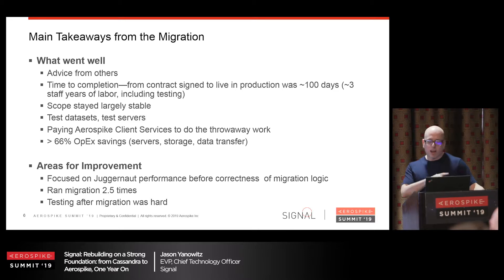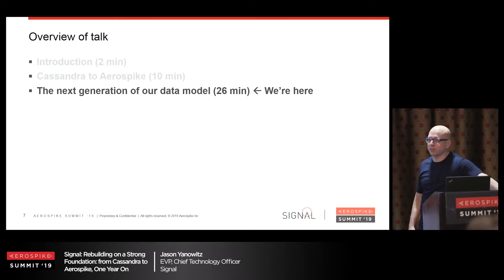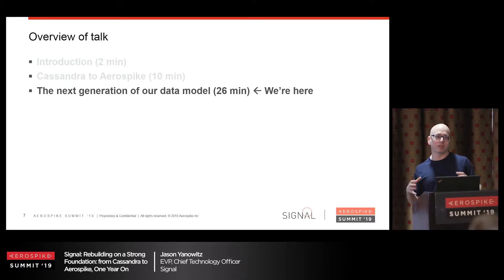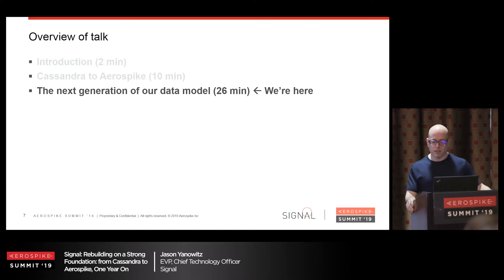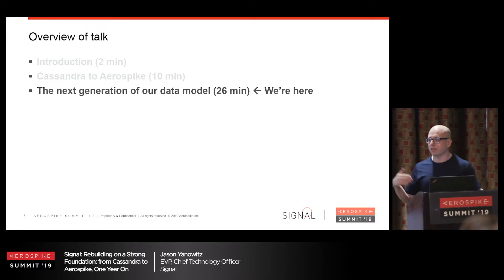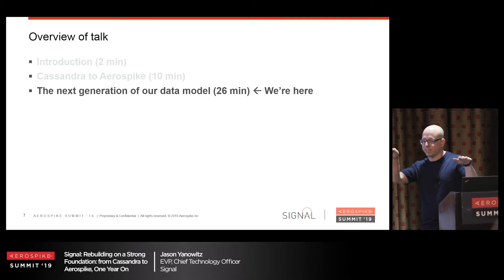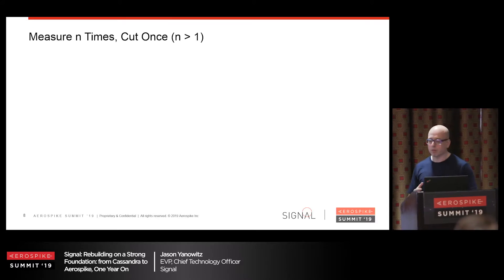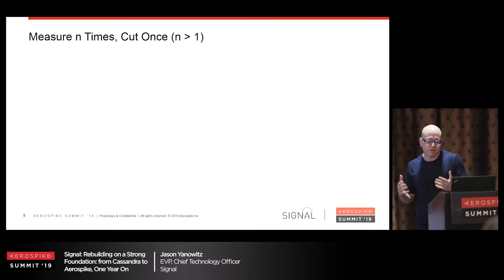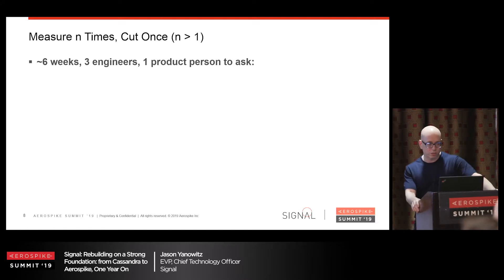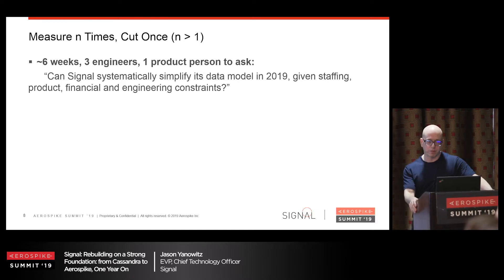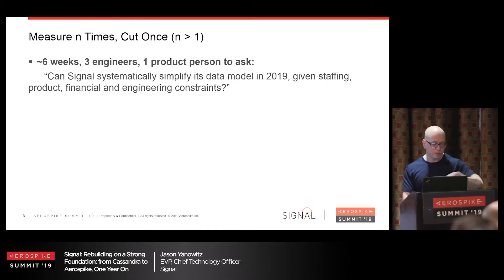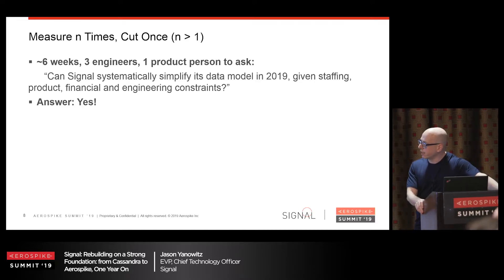Over the last year we had a recurrent issue: we've accreted complexity in our data model over time, and on the other hand the data model lacks the expressive power we need for the go-forward business. That's a terrible combination — too complex and it can't do what you need. So early in February we put together a team of three engineers and one product person to research within six weeks whether we could systematically simplify and improve our data model this year. Obviously we concluded yes, otherwise this talk would be over.